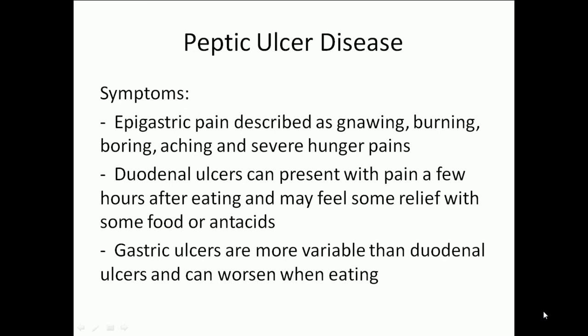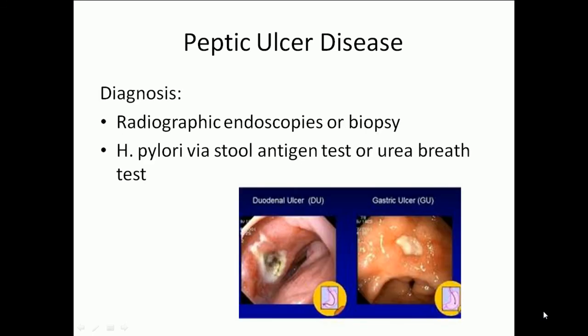Symptoms of peptic ulcer disease include epigastric pain that can be described as gnawing, burning, boring, aching, and severe hunger pains. Duodenal ulcers can present with pain a few hours after eating and may feel some relief with food or antacids. Gastric ulcers are more variable than duodenal ulcers and can worsen when eating.